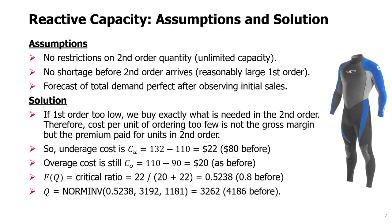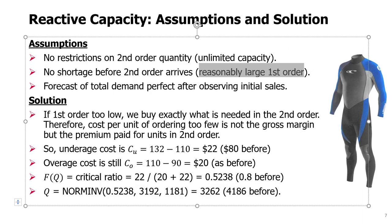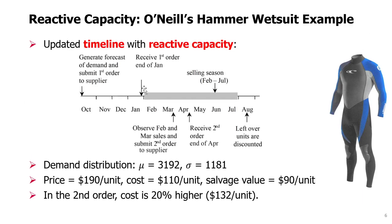Some assumptions we make in order to evaluate this and gain managerial insights: first, there is no restriction on the second order quantity — we don't put a maximum limit. Another assumption is that there will be no shortage before the second order arrives, meaning the first order will be reasonably large and sufficient to last at least half the season with close to 100% likelihood.